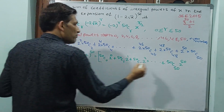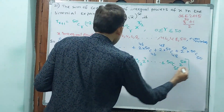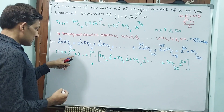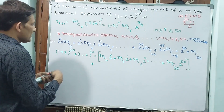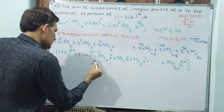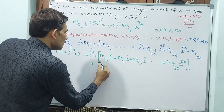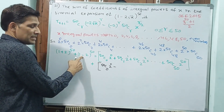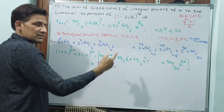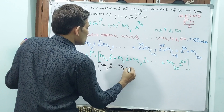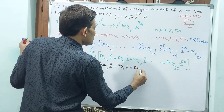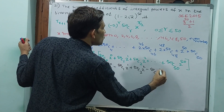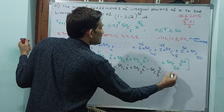For (1 − 2)^50, the expansion gives: 50C0 − 50C1 · 2^1 + 50C2 · 2^2 − 50C3 · 2^3 + ... and so on, with alternating signs.